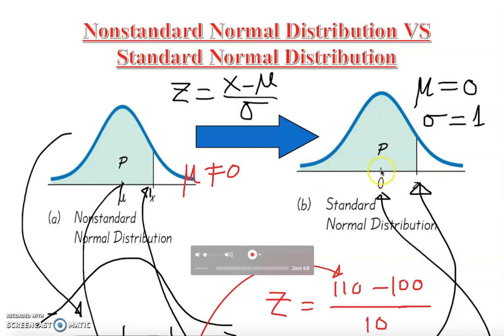The standard normal curve is symmetric about zero. The part of the curve to the left of zero is the mirror image of the part to the right. You can shade the area under the curve — almost all the area lies between three standard deviations.